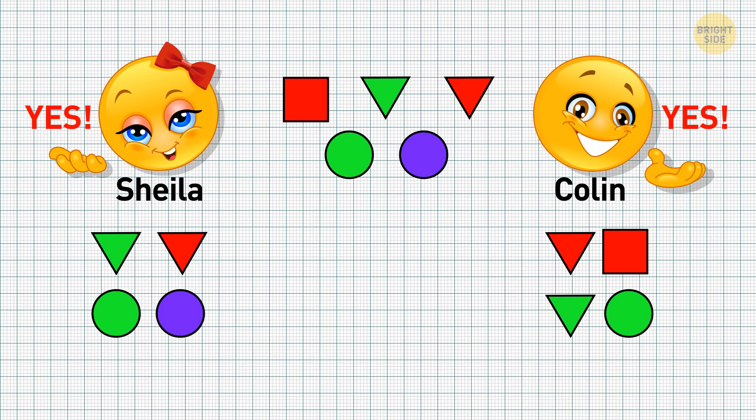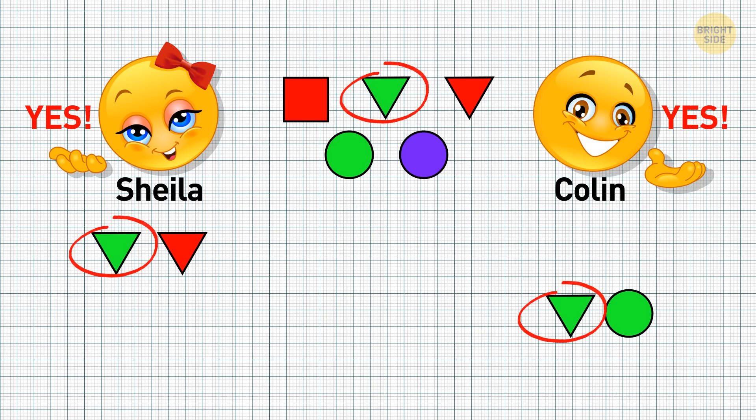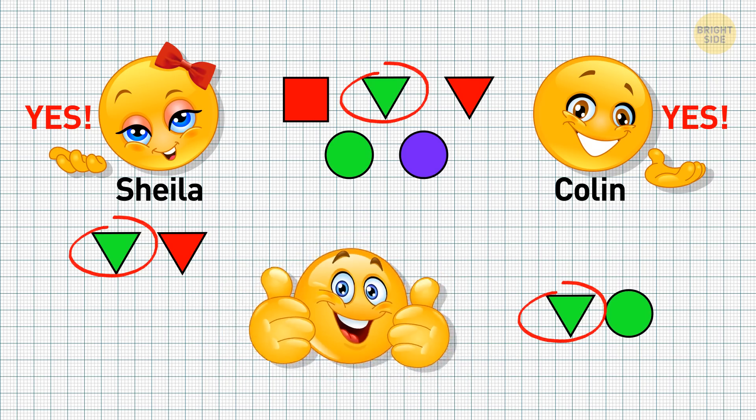After the second question, neither of them still knew the answer, and they got new info again. Sheila was left with two triangles and one circle. She knew the shape of the object, so if she still didn't know where the prize was, it couldn't be the circle. And Colin was left with two green and one red shape. Since he knew the color but didn't know the answer, it couldn't be the red one. Thus, two more objects were eliminated for both. And finally, after the third time the host asked them about the prize, they knew for certain that it was the green triangle, using only their initial information.